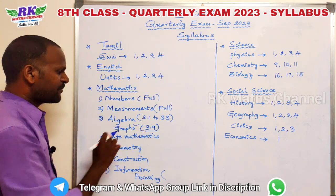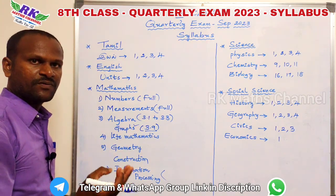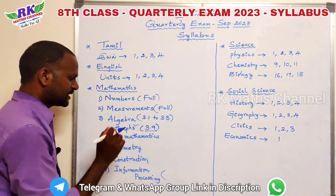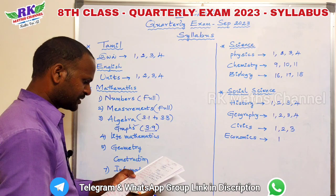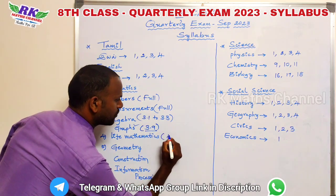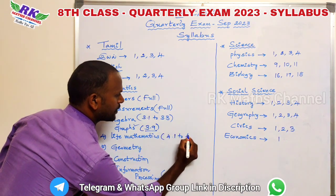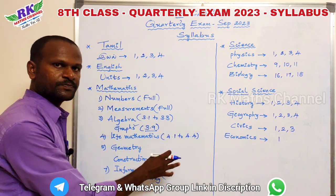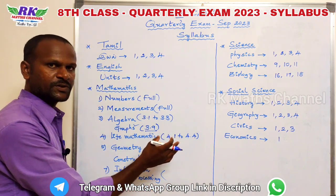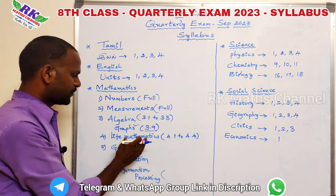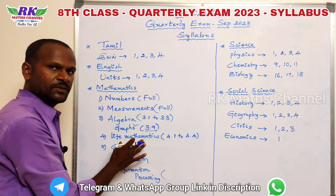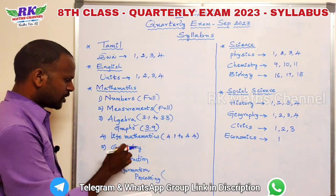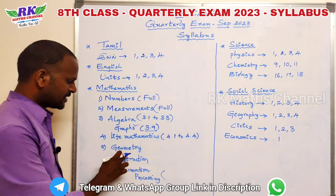Life Mathematics covers Profit, Loss, and Compound Interest — that is the Life Mathematics topic, from 4.1 to 4.4. Compound interest is calculated in this section. So unit 4 is Life Mathematics.